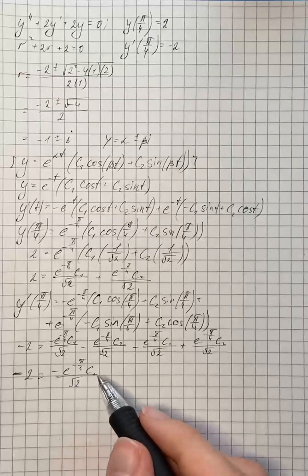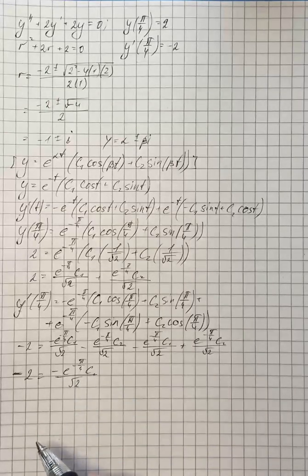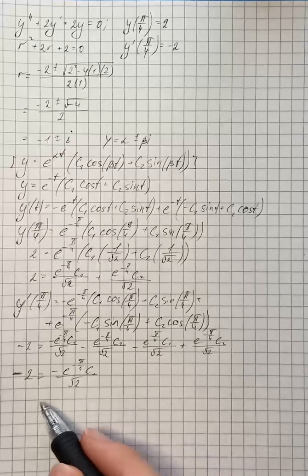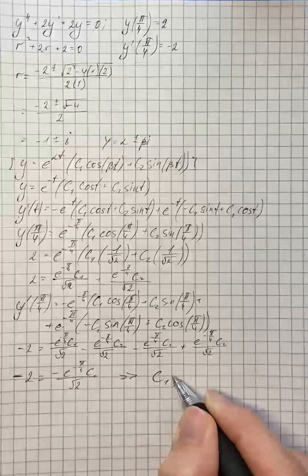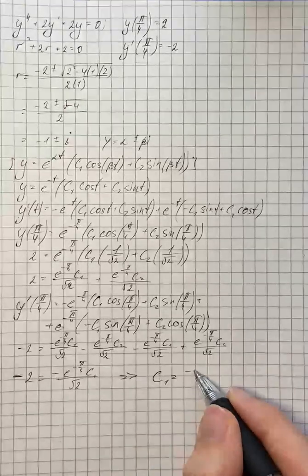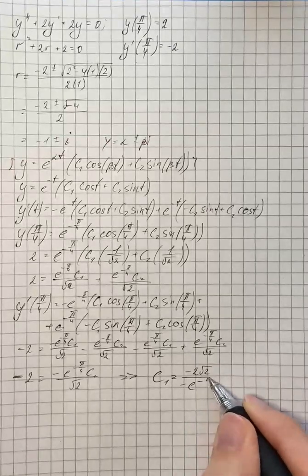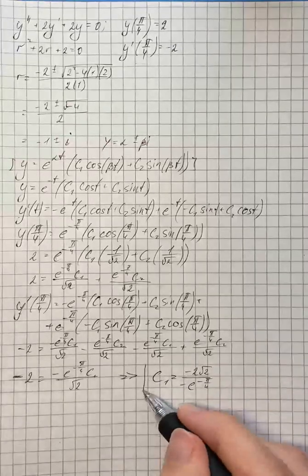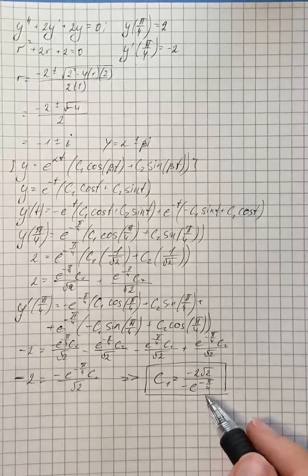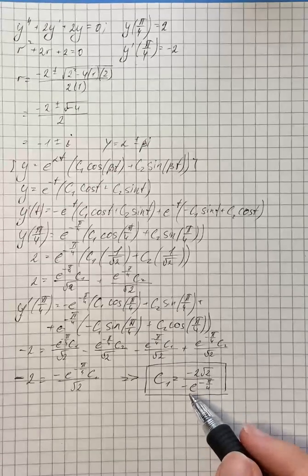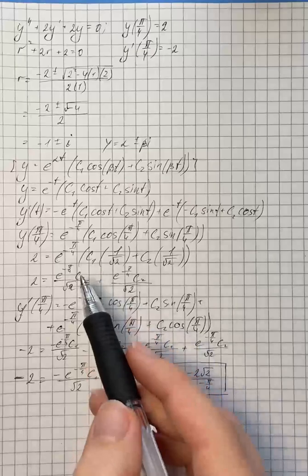We multiply both sides by square root of 2 over negative e to the power of negative π/4, and we get that c₁ equals negative 2 square root of 2 over negative e to the power of negative π/4, which simplifies to 2 square root of 2 times e to the power of π/4.